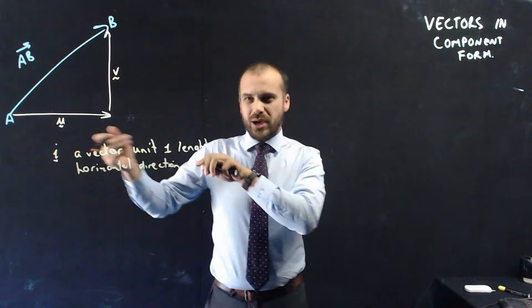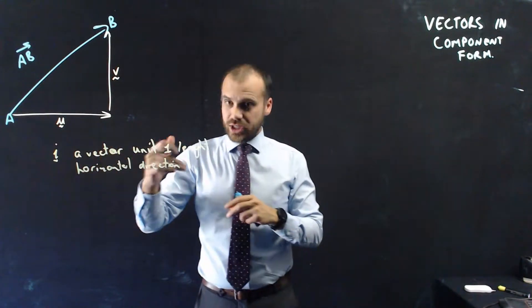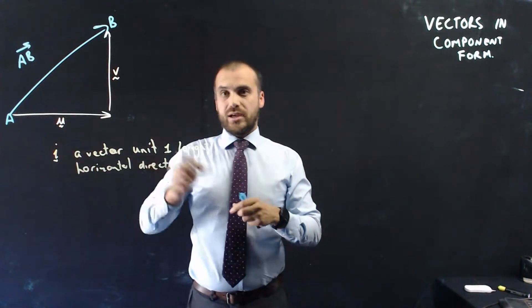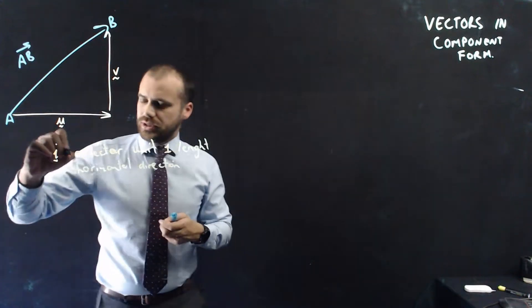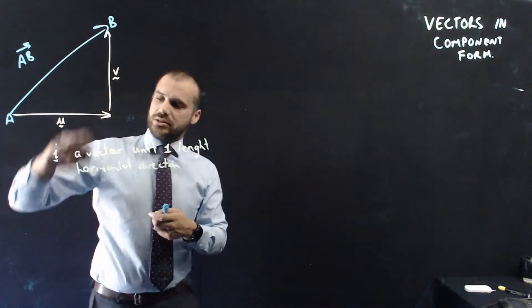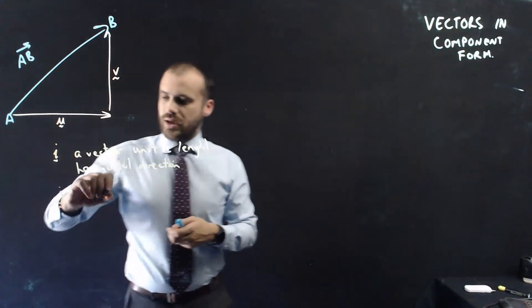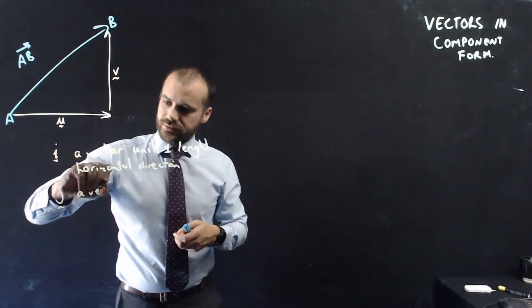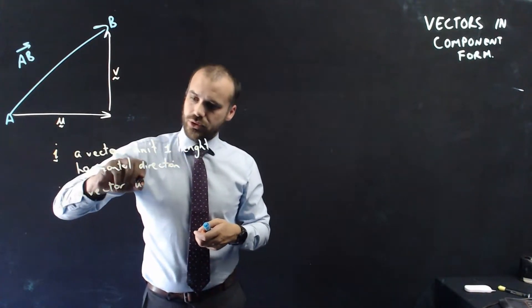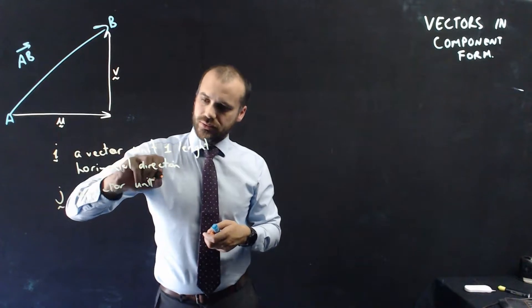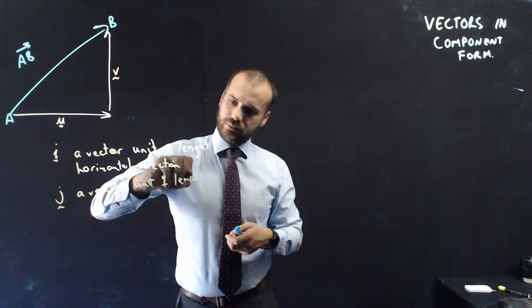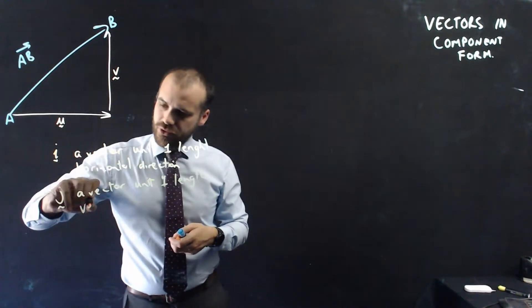So it's important to think about I, not as a direction, but as an actual vector with some length, length 1. Now, similarly, we can call this vector J, and that's a vector, unit 1 length, in the vertical direction.